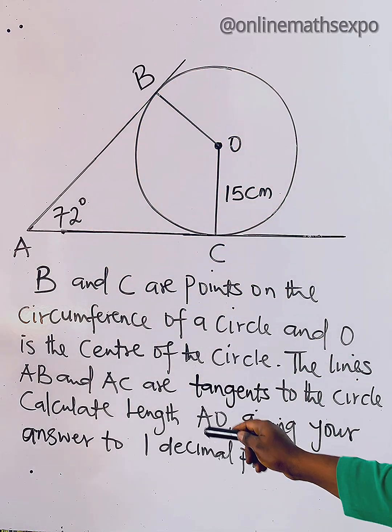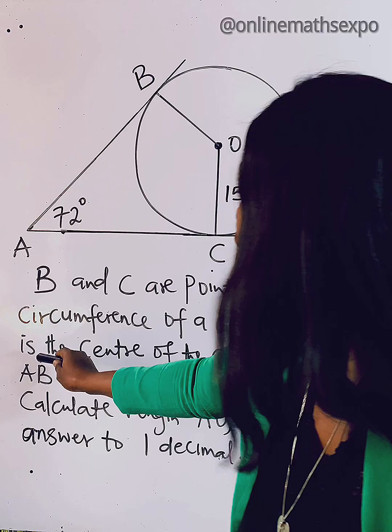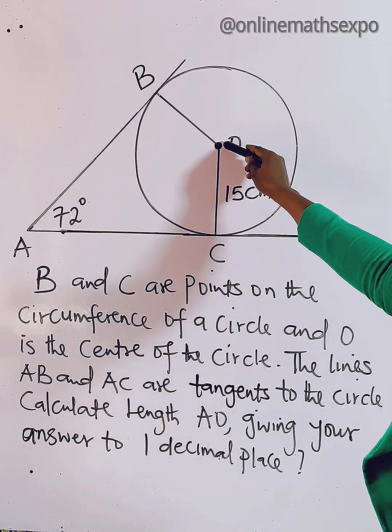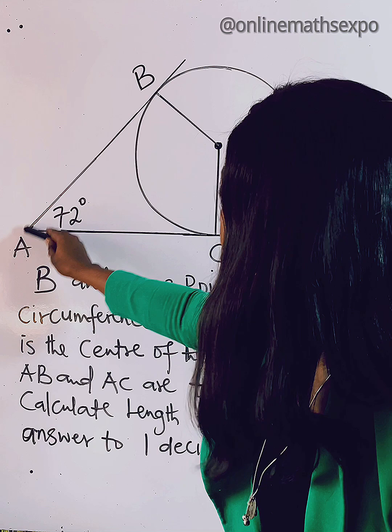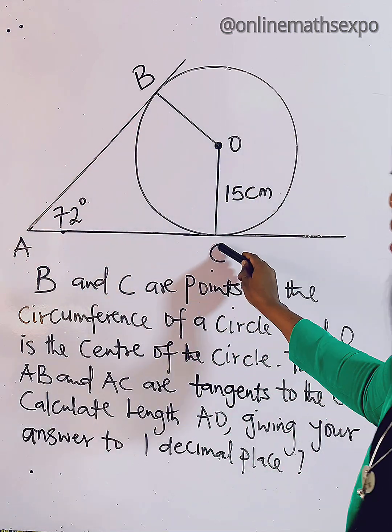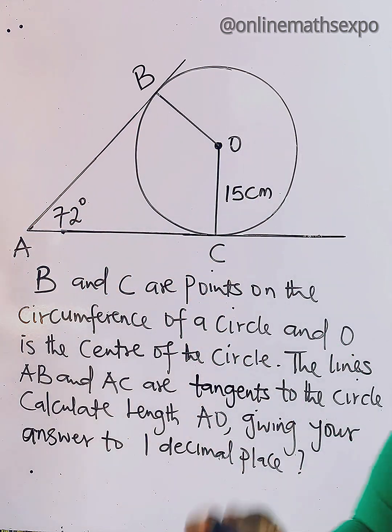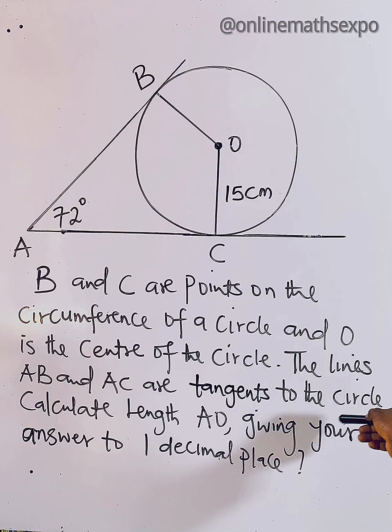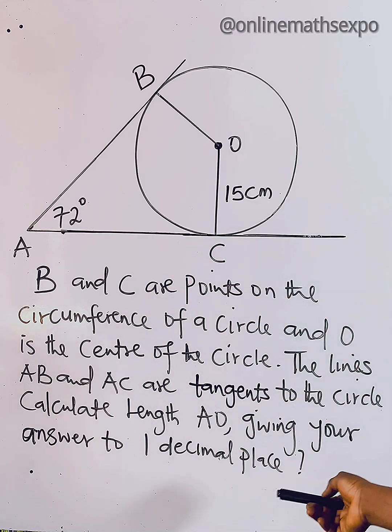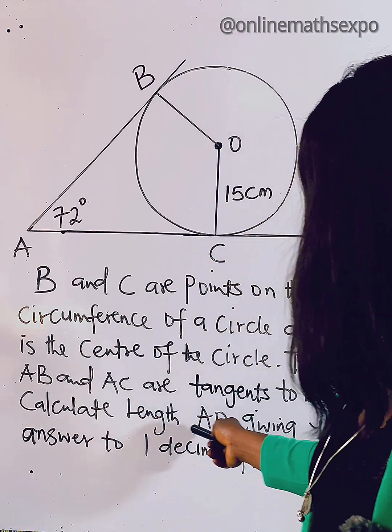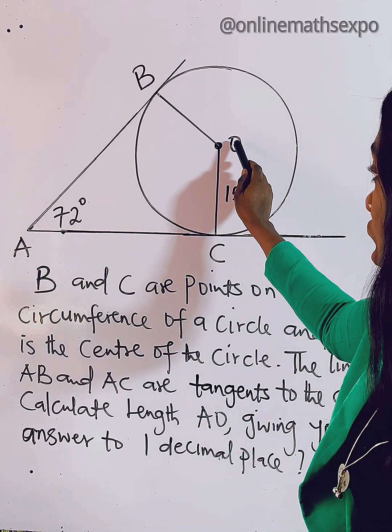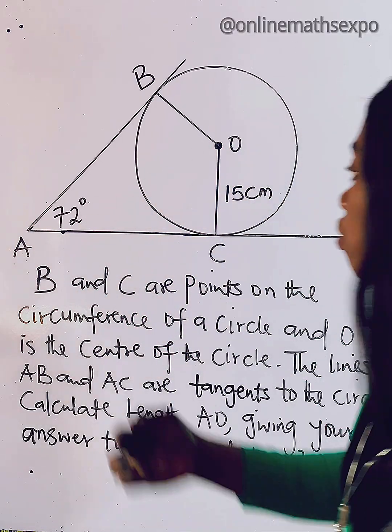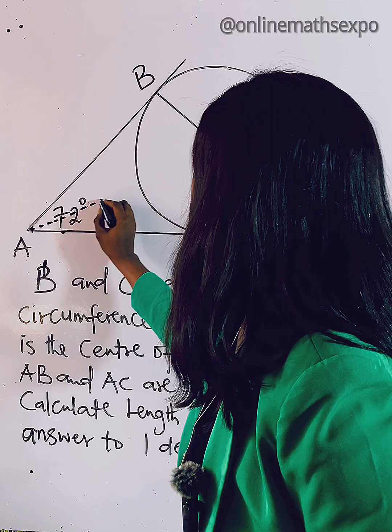We're also told that O is the center of the circle. Just as you can see, the lines AB and AC - this is AB, this is AC - are tangents. I'm going to explain that more. They are tangents to the circle. The question says calculate the length AO. You want to know from here to this point - that's what you want to find, from here A to O.